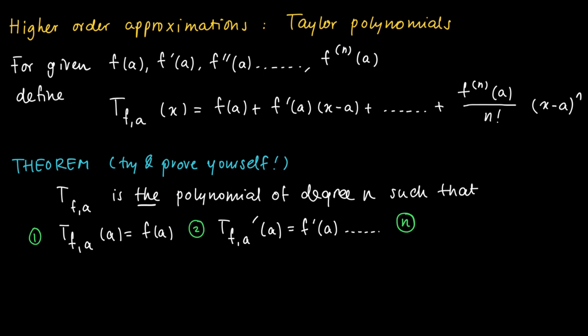So the final condition is that if we take the derivative of T_{n,a} n times and evaluate at a, then we get the nth derivative of f at a.